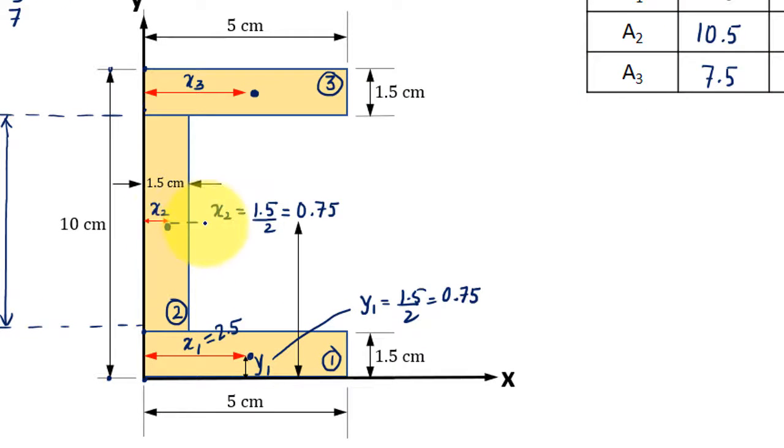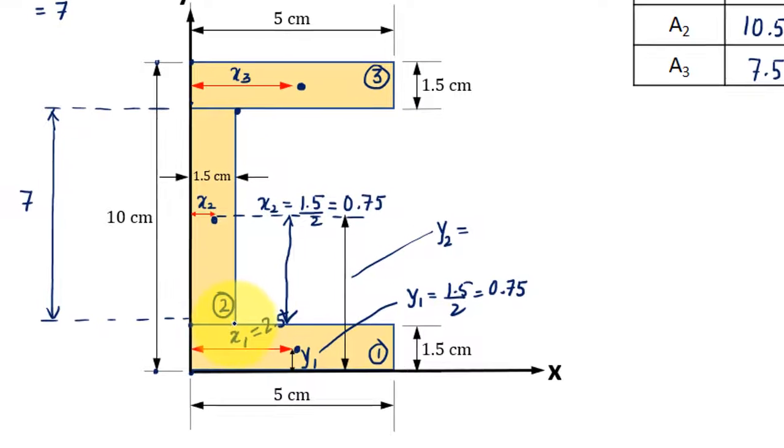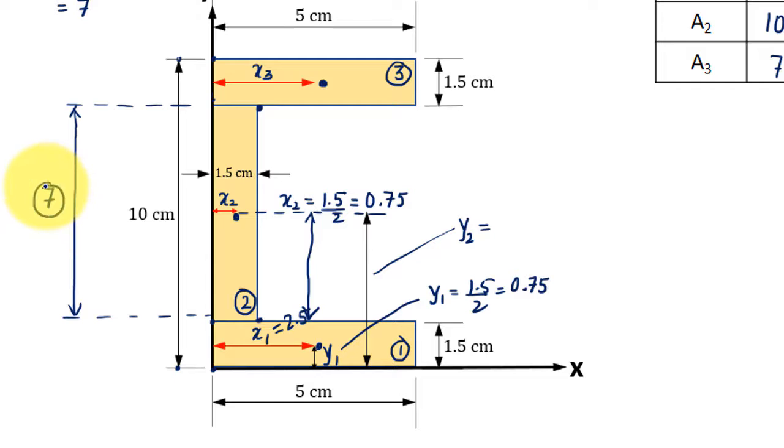As far as y2 is concerned, this is going to be y2, here we have the centroid. Now watch this carefully: this much is 1.5, and from here to here this distance is 7, so half of 7 is 3.5. So 3.5 plus 1.5 will give you the value of y2, which is equal to 5.